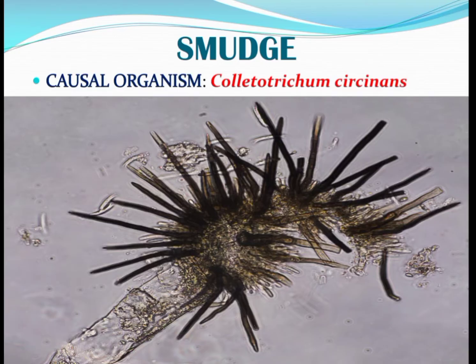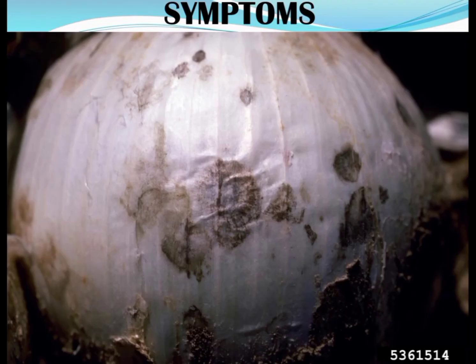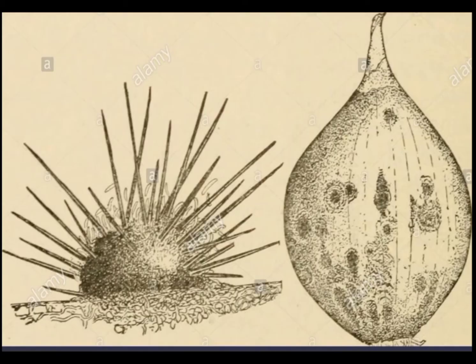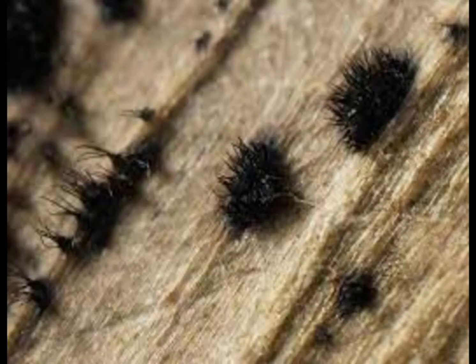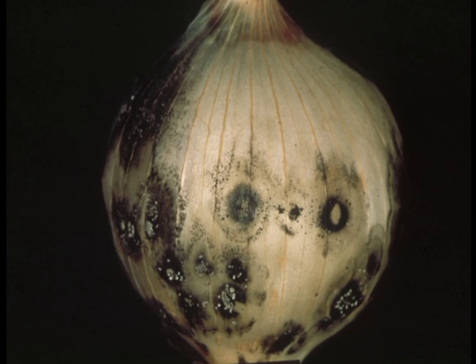The next disease is Smudge, caused by Colletotrichum circinans. Symptoms: Symptoms are present chiefly on scales of bulbs and small leaves attached to bulbs. On infected scales of bulb, subcuticular dark green, later turned black, stroma are produced, which is called Smudge. Stroma are arranged in concentric circles on the outer surface. Acervuli and setae are produced. Under moist conditions, pink masses of conidia are produced. Inner scales of bulbs are also attacked. Spots are whitish in color with pink spore masses.